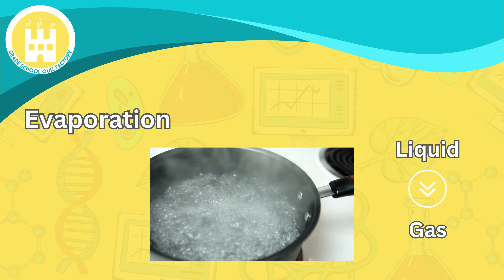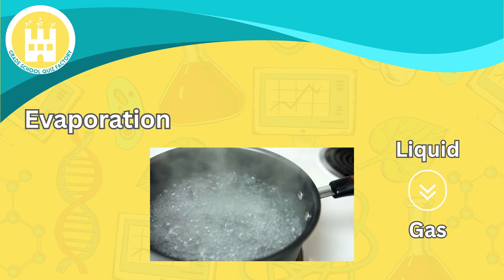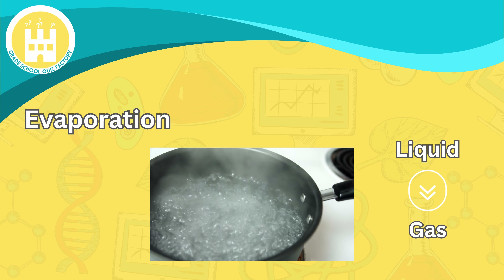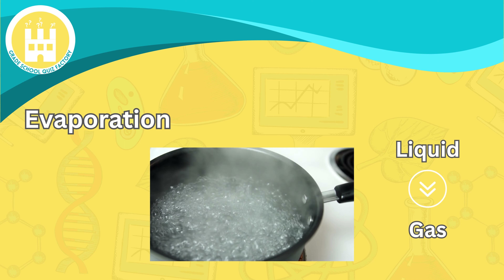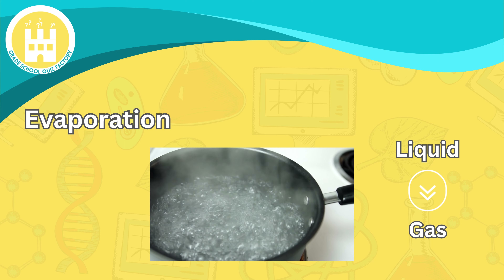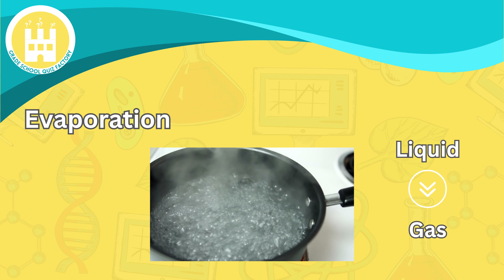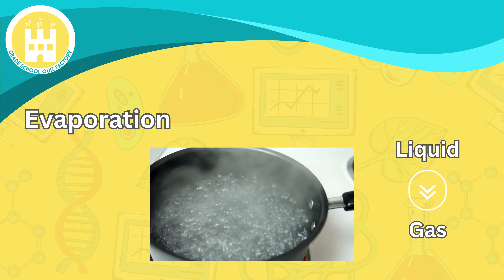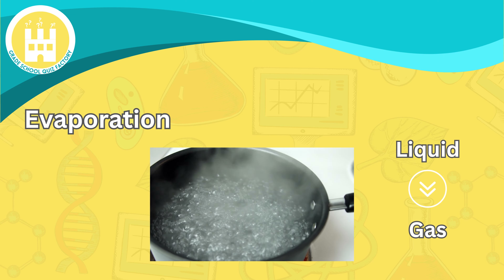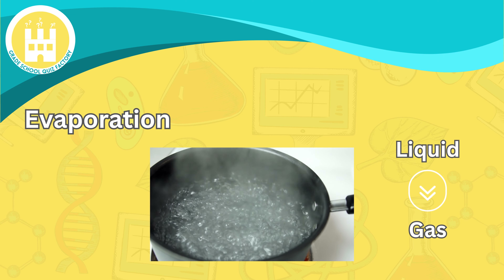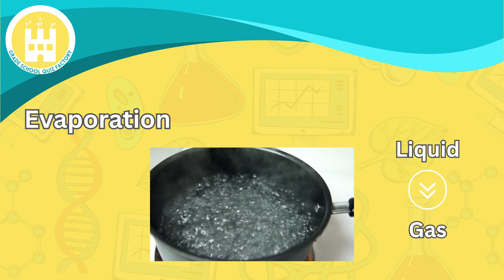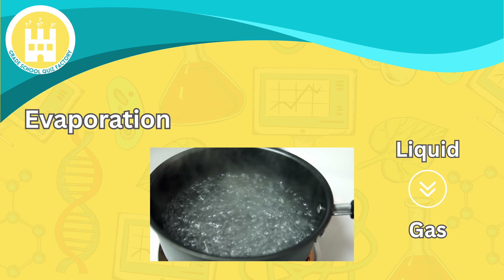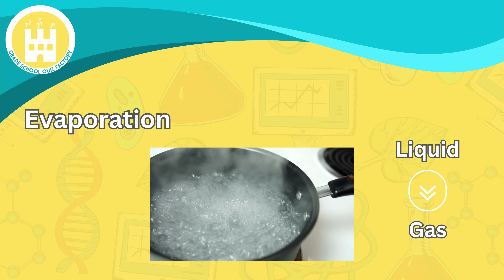Next, we have evaporation. Imagine a puddle of water left under the sun's rays. As time passes, the puddle disappears. Where did it go? It evaporated. When a liquid is heated, it turns into a gas and goes up, up, and away.